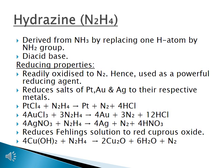Hydrazine reduces salts of platinum, gold, and silver to their respective metals. The equations are: PtCl4 + N2H4 → Pt + N2 + 4HCl; 4AuCl3 + 3N2H4 → 4Au + 3N2 + 12HCl; and 4AgNO3 + N2H4 → 4Ag + N2 + 4HNO3. It also reduces cupric hydroxide to red cuprous oxide: 4Cu(OH)2 + N2H4 → 2Cu2O + 6H2O + N2.